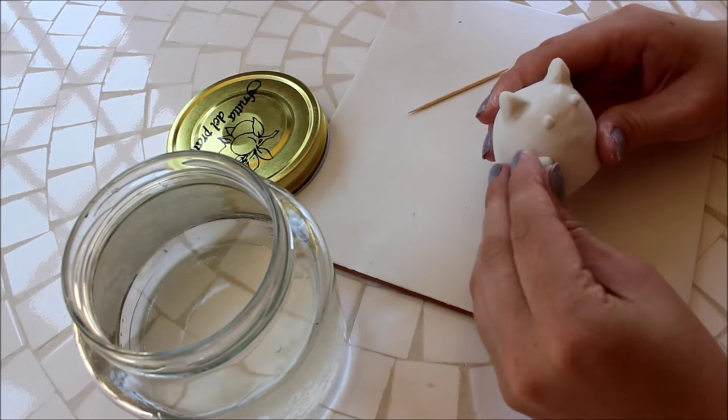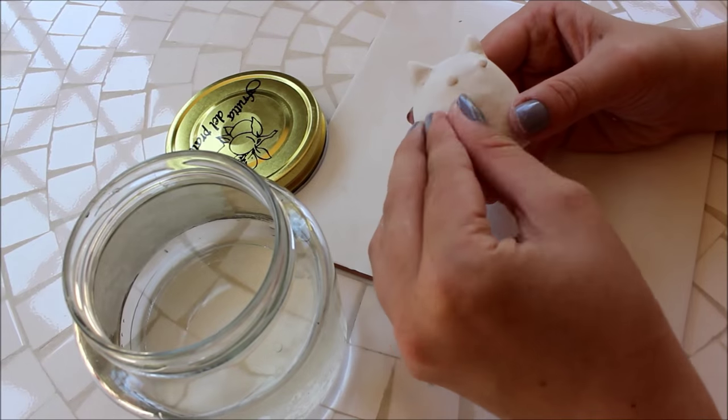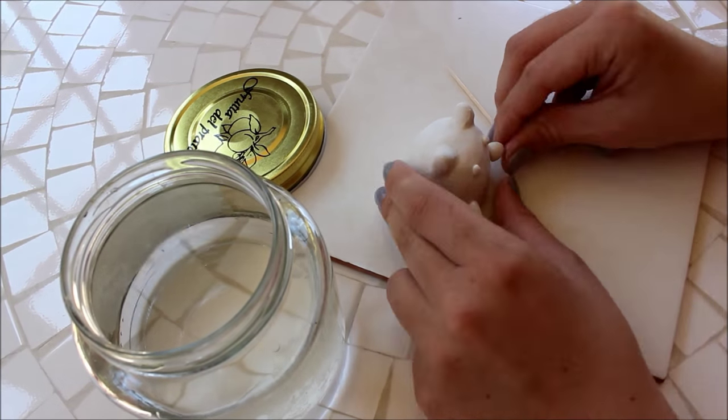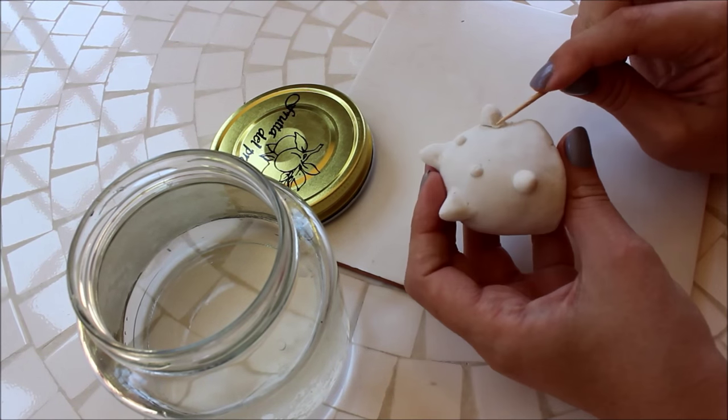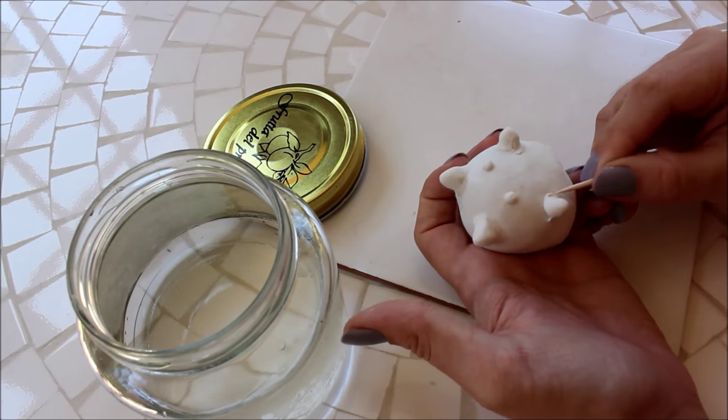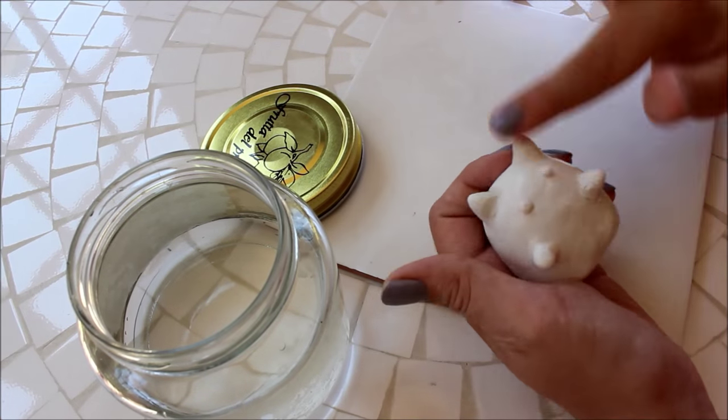Add two arms from clay in the same way that you added the ears and then leave your Pusheen to dry. I left my Pusheen for about 24 hours before starting to paint this but this will depend on the type of clay that you're using.